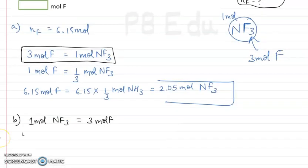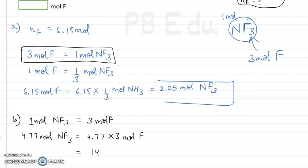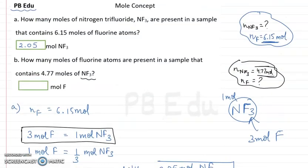We write 4.77 moles of NF3. It means that 4.77 is multiplied on both sides according to mathematics. So 4.77 multiplied by 3 moles of fluorine atoms gives us 14.31 moles of fluorine atom. The answer is 14.31 moles.